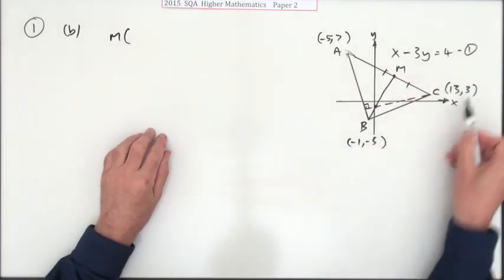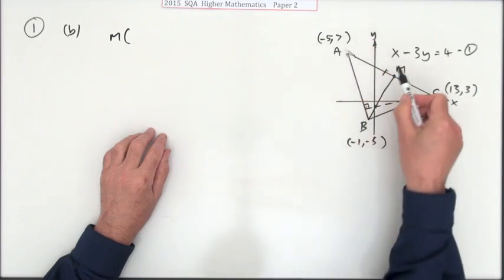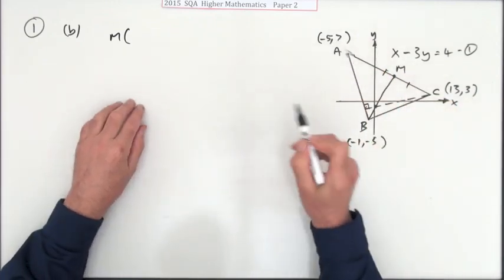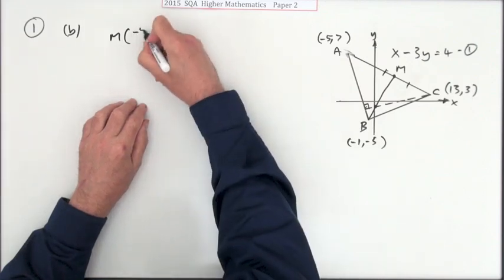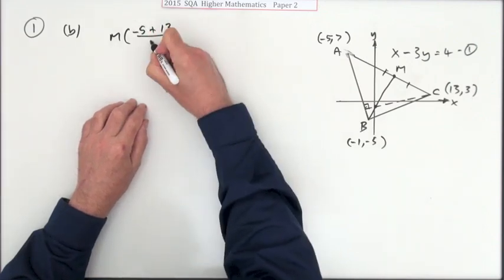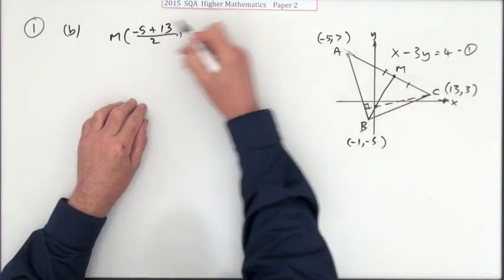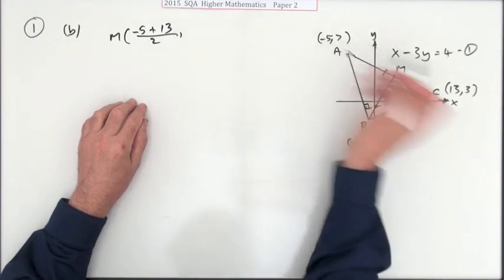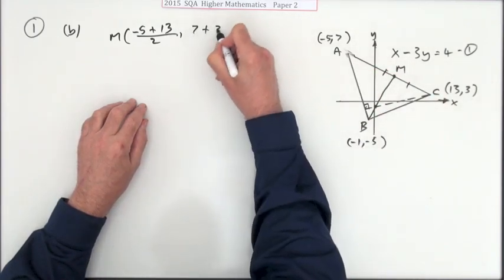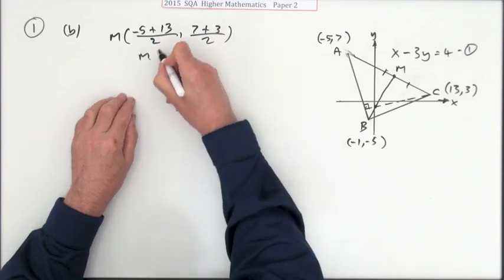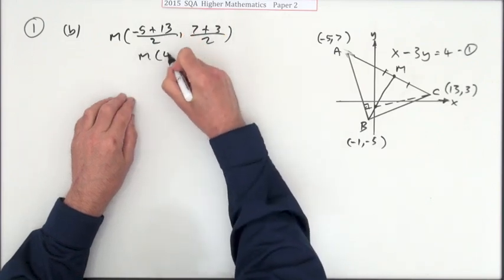What's the middle of this one? Sometimes it's obvious. Negative 5 to 13, if you're not too sure just add them and half it. What's halfway between negative 5 and 13? Add them and half it. Since I've done it for that, I'll do it for this. What's halfway between 7 and 3? Add them and half it. So the midpoint is going to be 8 over 2 is 4 and 10 over 2 is 5.